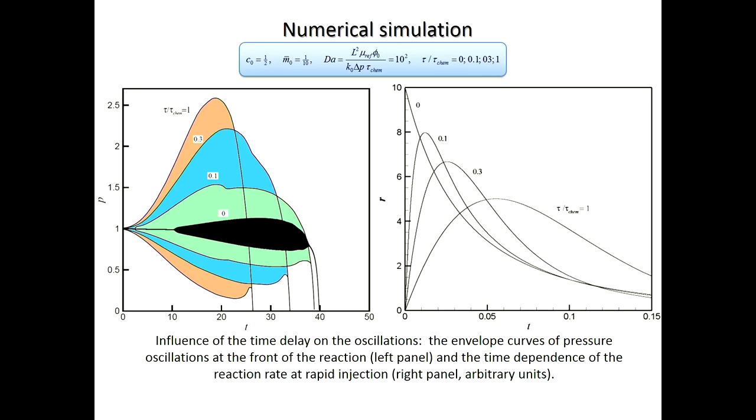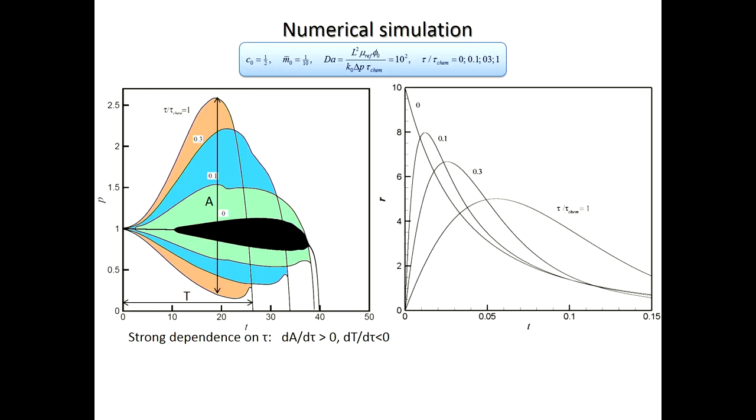The answer is given here in this figure. We can see envelope curves for pressure oscillations at the front of the reaction. The front was defined as the point where the concentration of sodium bicarbonate equals half of its initial value. We see that when time delay increases, the amplitude of oscillations also increases, and the time of propagation from the inlet to outlet boundary decreases with this parameter.